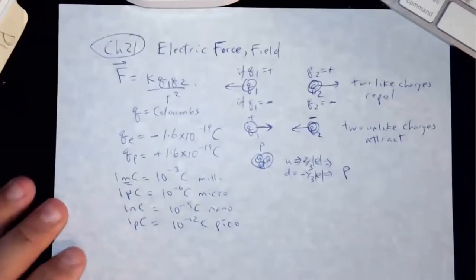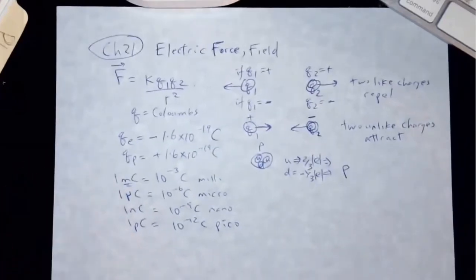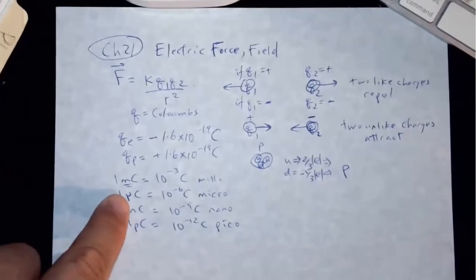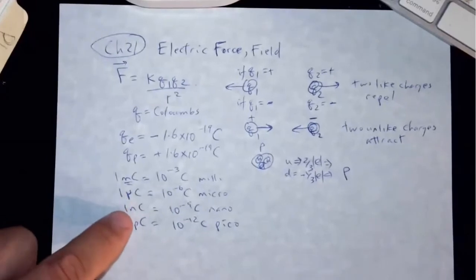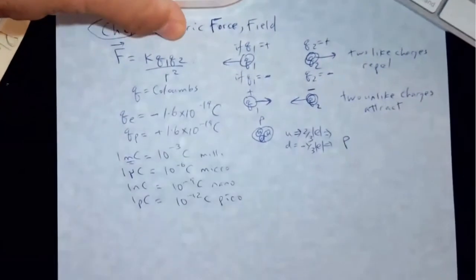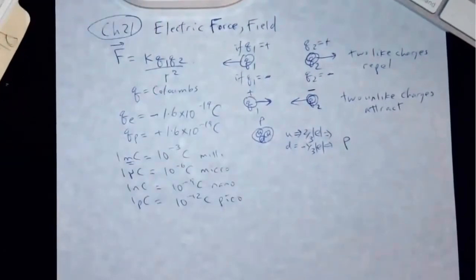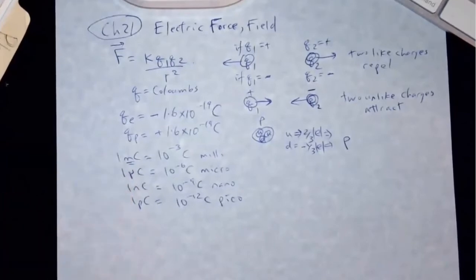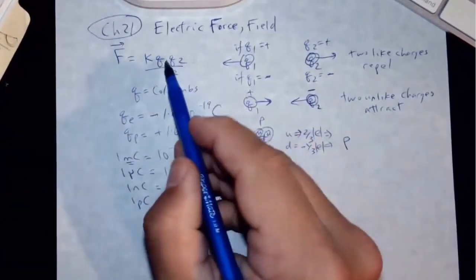So like, let's say if you rub your hand against something and it builds up some static, it may be the charge that it builds up is something like that order, one microcoulomb, or maybe one nanocoulomb. Those are the everyday charges that we encounter. Let's say you put some clothes in the dryer and they build up some static and they get stuck to each other. Again, those would be something like that of that order.